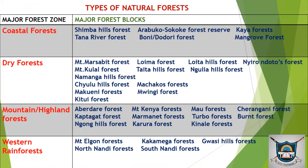There is a chart here showing types of natural forests. We have the major forest zones and major forest blocks — these are the classifications of forests in Kenya. We have the coastal forests, which include the Shimba Hills forest, the Tana River forest, the Arabuko Sokoke forest reserve, the Boni or Dundori forest, and the Kaya and Mangrove forests.